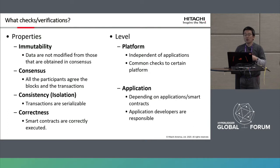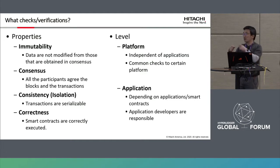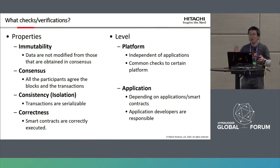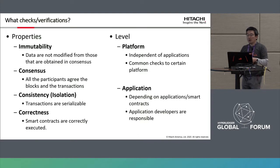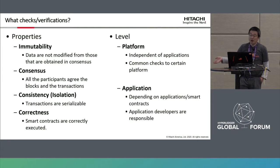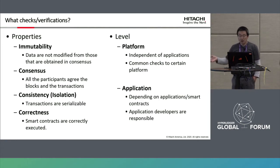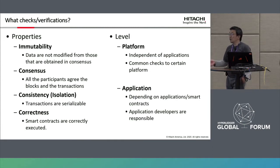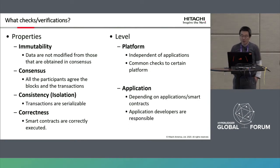We need to consider the level of checks. Platform-level checks are of course mandatory — we need to check all blocks and transactions. But considering auditing, application-level checks are also important. Depending on the application or smart contract, additional checks are necessary. This part is done by application developers or system users, and we provide APIs to easily write application-level checkers.